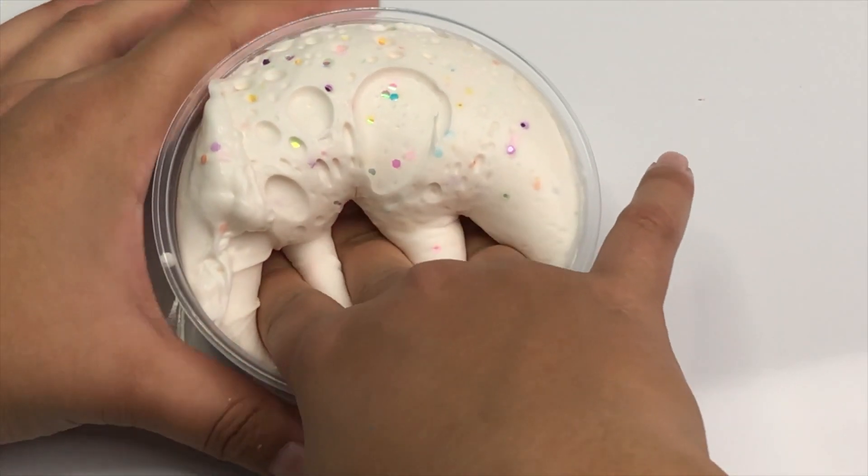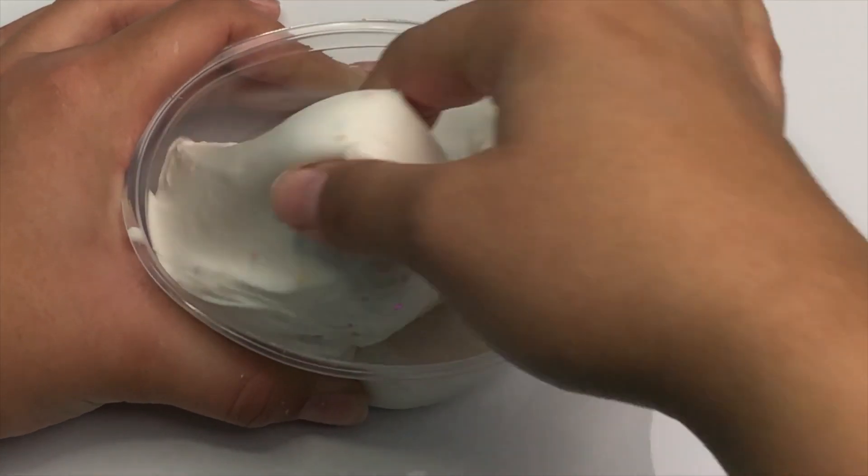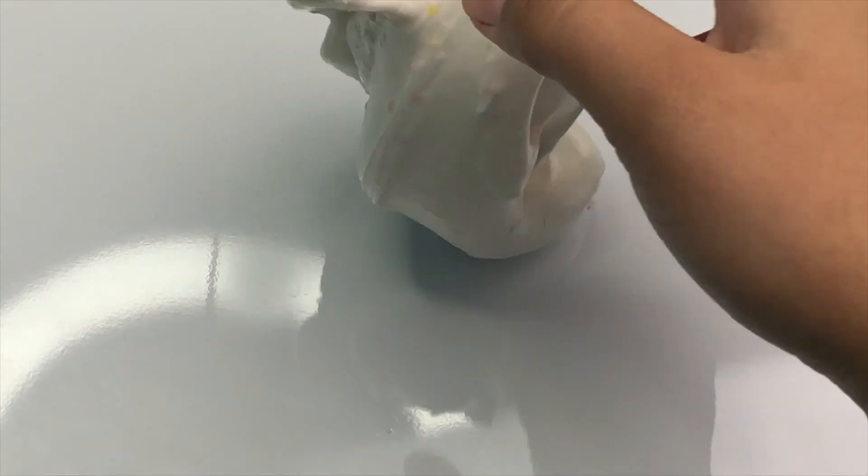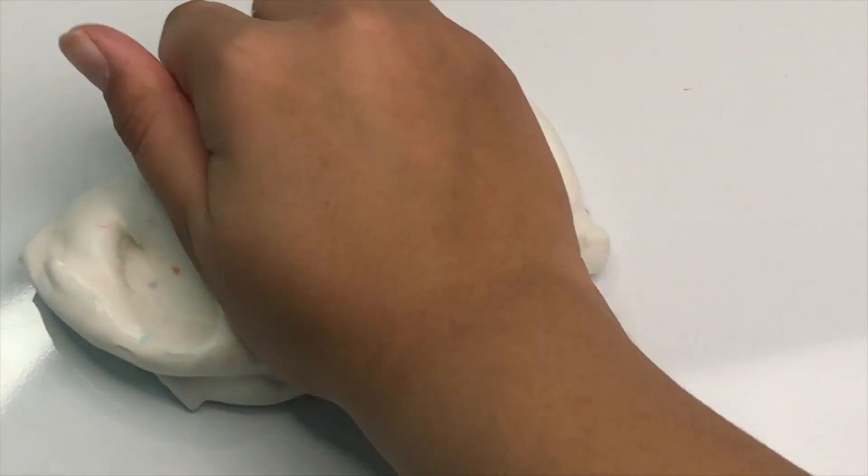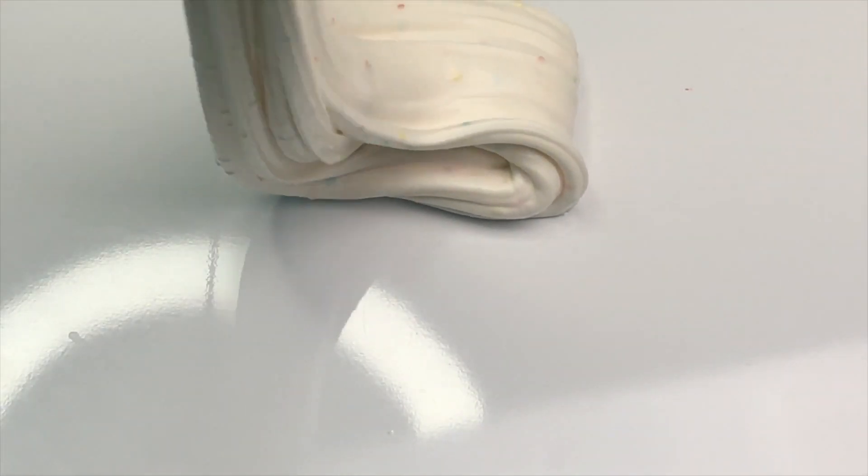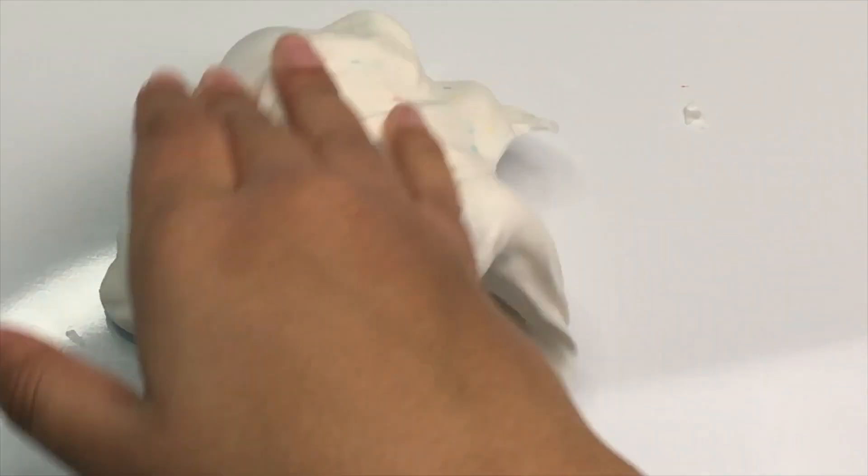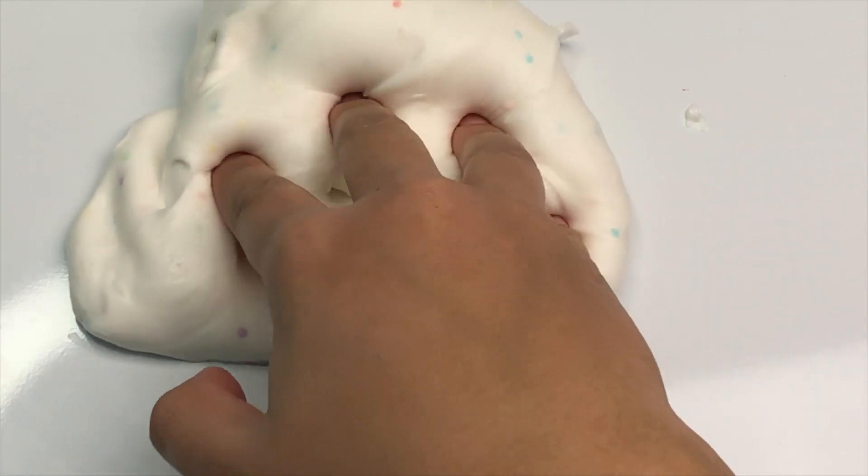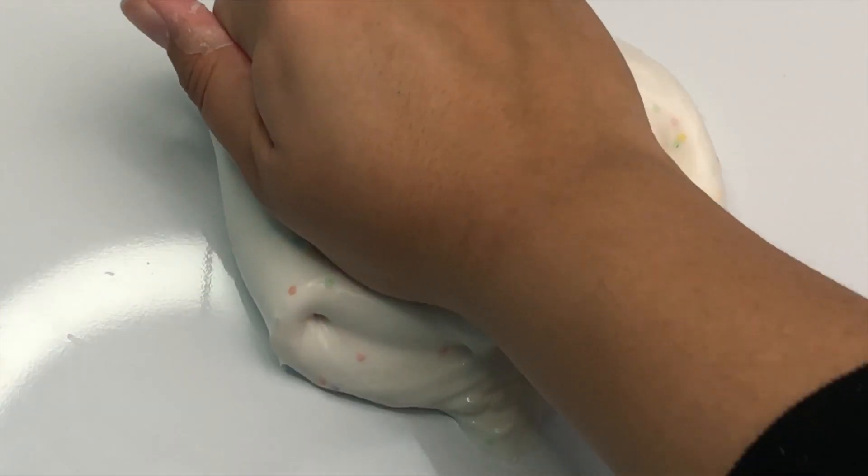Last but definitely not least we have Fluffy Fruit Loops Buttercream. This one smells just like the name Fruit Loops. It smells so good. It's a nice fluffy creamy white base with some chunky rainbow glitter all throughout and each of these will also come with a cute little fruit loop charm. I really like this slime. It's so fluffy and has some really nice bubble pops. So I hope you guys enjoyed this video and I hope to see you guys in the next one. I'll have some reviews up soon. Thank you guys so much again for watching. I love you guys so much and I'll see you guys in the next video. Bye!